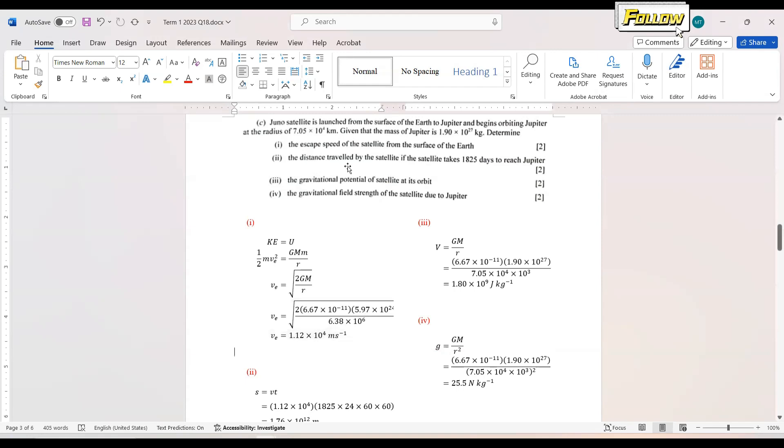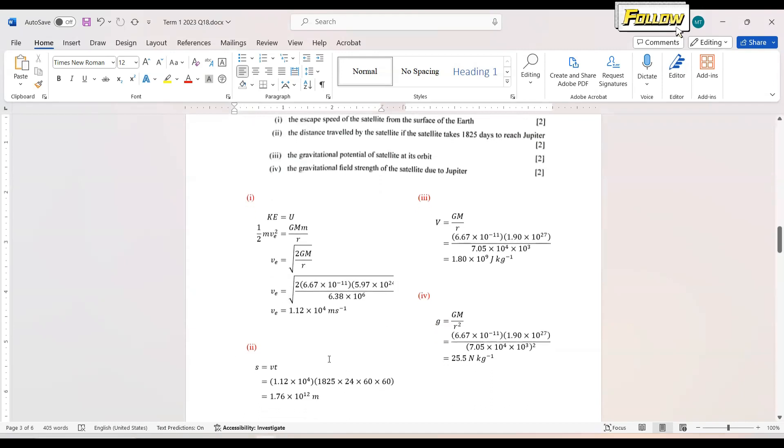Question number two, distance traveled by the satellite if the satellite takes 1,825 days to reach Jupiter. So this is quite strange. But maybe there's one assumption that we need to make is that the velocity stays constant during the travel of the satellite to Jupiter. So for this case, we apply S equal to Vt for the case of constant velocity. Use the answer in one, where we have the constant velocity is 1.12 times 10 to the 4 m per second. Multiply the time where you need to convert it into the unit of seconds. So the answer here is 1.76 times 10 to the 14 m.